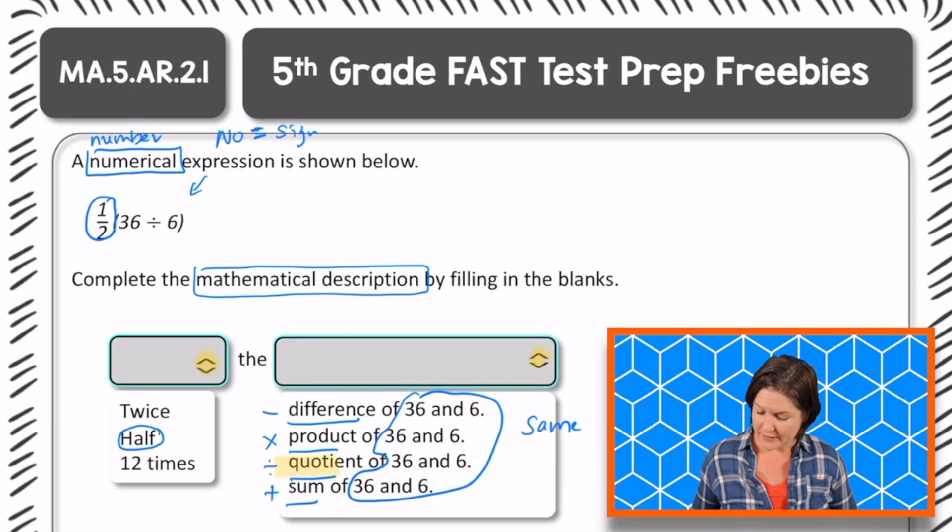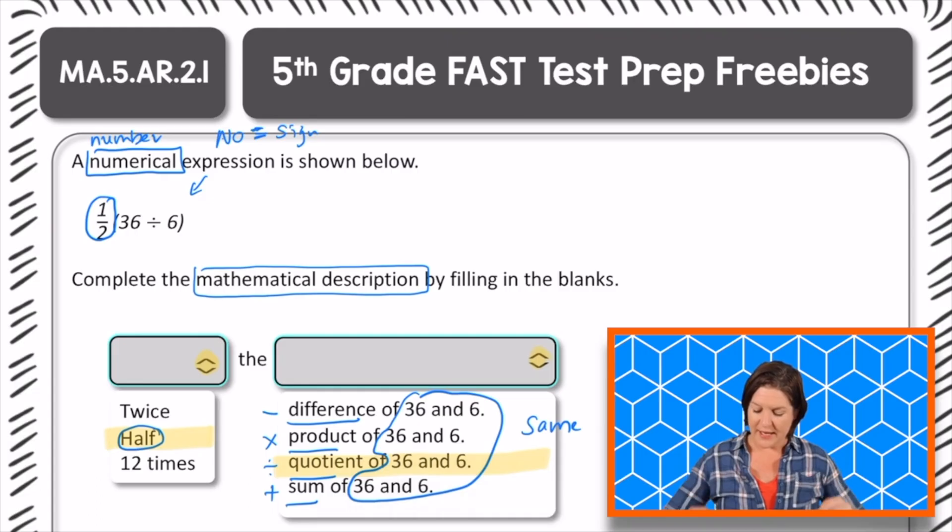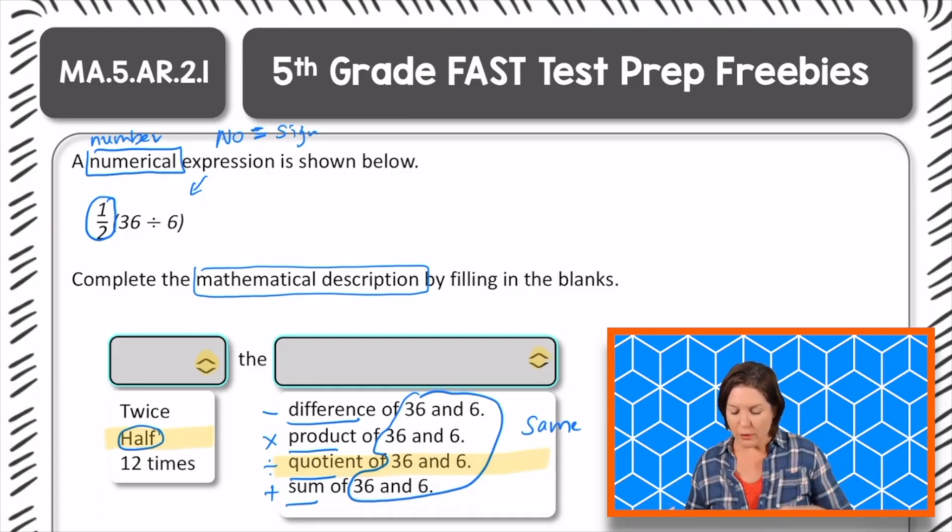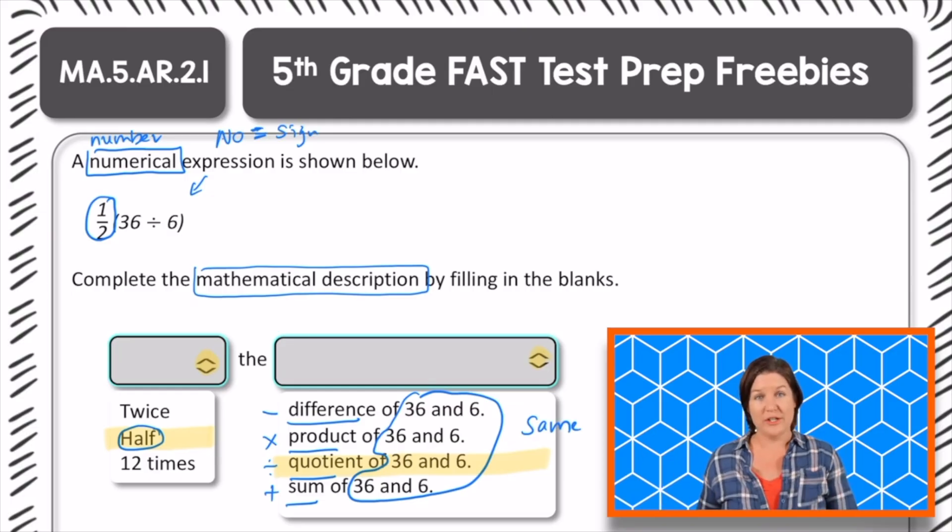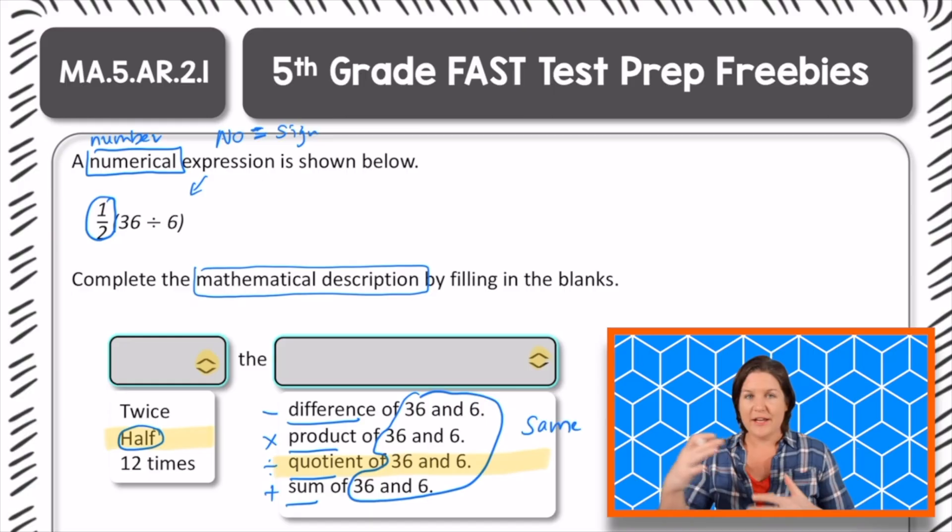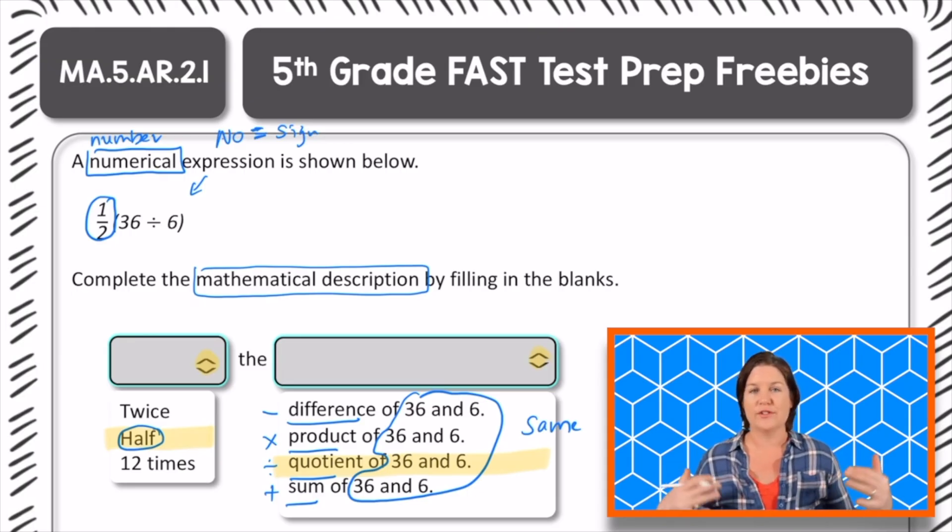I'm going to go ahead and highlight the answer that I would select, and highlight the answer that I would select right there, so we would want it to say, half the quotient of 36 and 6. Notice how I showed my journey of what was going on right here. That's important. It helps you to identify your way through the problem, make sure that you are developing those strategies too, and not just looking at it and picking answers. It's important to showcase your journey along the way.